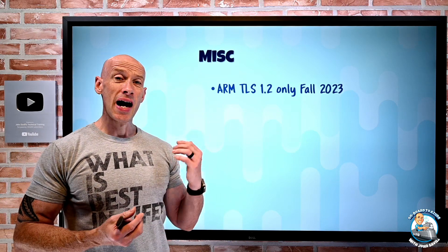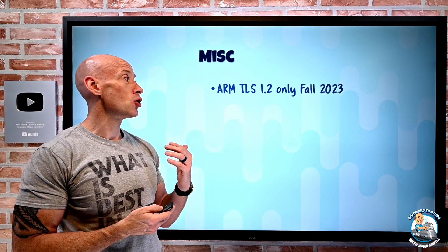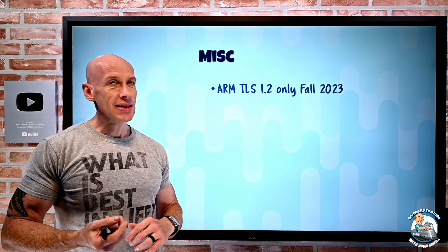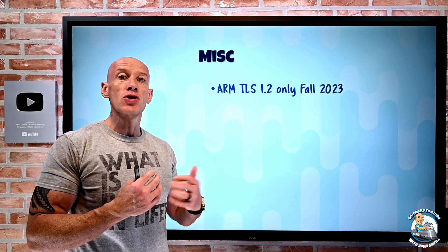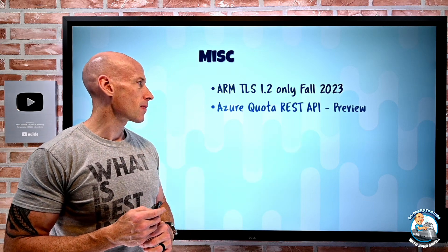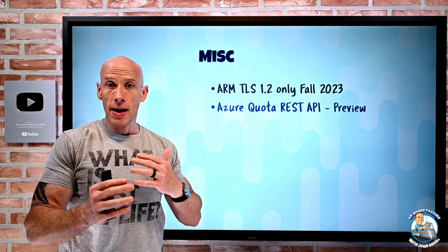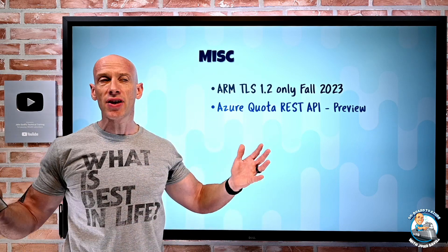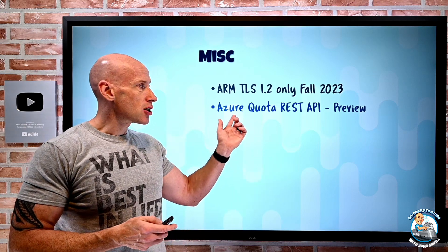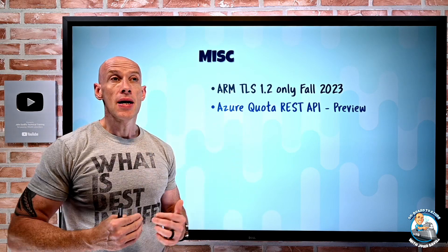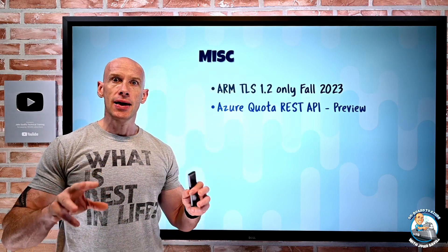In miscellaneous news: the Azure Resource Manager endpoint used for management interactions will require TLS 1.2 or above from fall 2023 — TLS 1.1 and older will be deprecated. You have time, but make sure all your environments and operating systems support TLS 1.2 or above. There's also a new Azure Quota RESTful API in preview. When you have a subscription, there are limits — number of virtual machines and other things. Through this Azure Quota REST API, you can now programmatically view your limits, see how much of those limits you're using, and put in a request to raise those limits.